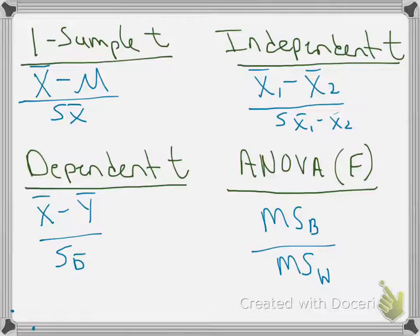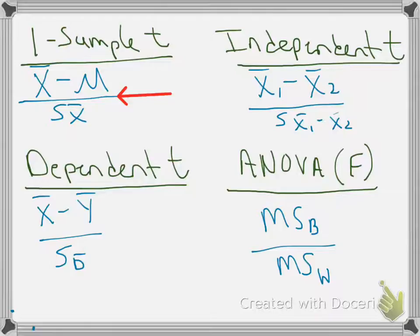That is, to find out whether they're statistically significantly different from each other. Let's take a look at the formula for the one-sample t-test first, because it's probably the most straightforward. This is where we are comparing a sample mean to a population mean — that is the numerator of the formula.